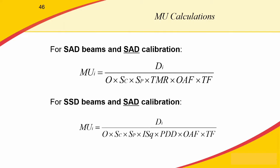For SAD beams with an SAD calibration, our depth dose factor is TMR. However, if we were treating a patient with an SSD setup but performed our calibration in an SAD setup, we would have to use an inverse square factor times our PDD to calculate our MUs.